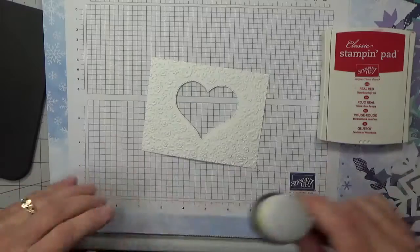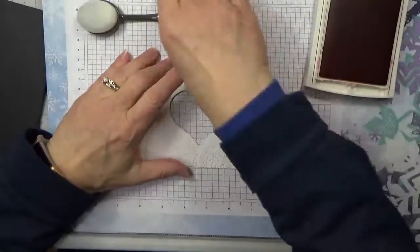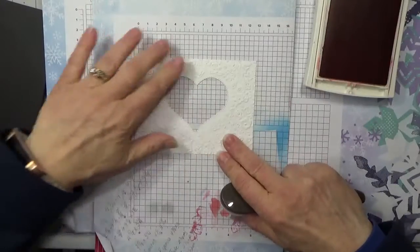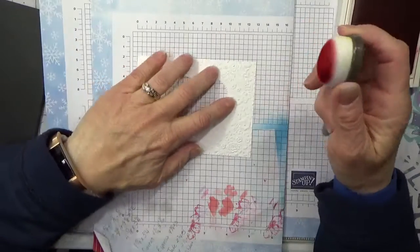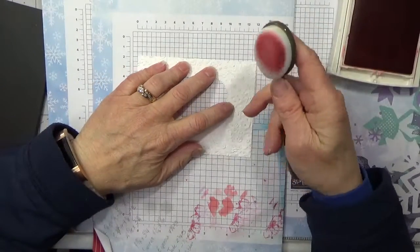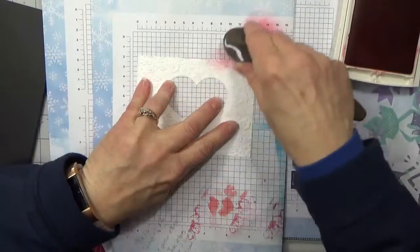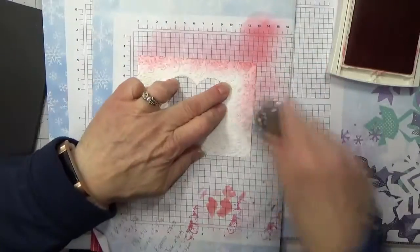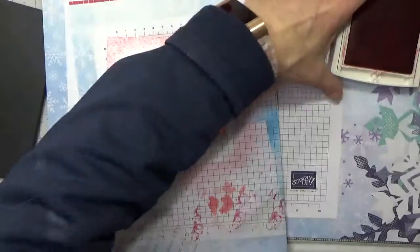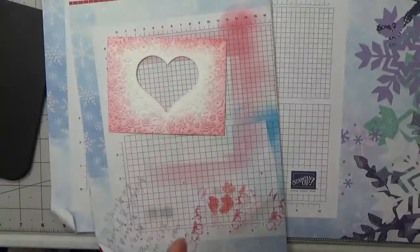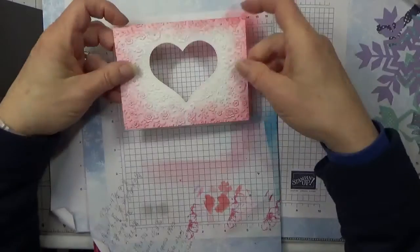The next thing we need to do is let me get a piece of scrap paper in here. We're going to sponge up our edges. Now anytime you start sponging, you want to start off your paper, and there we go, just that simple. These new blending brushes are just wonderful. So there we have our card front sponged.